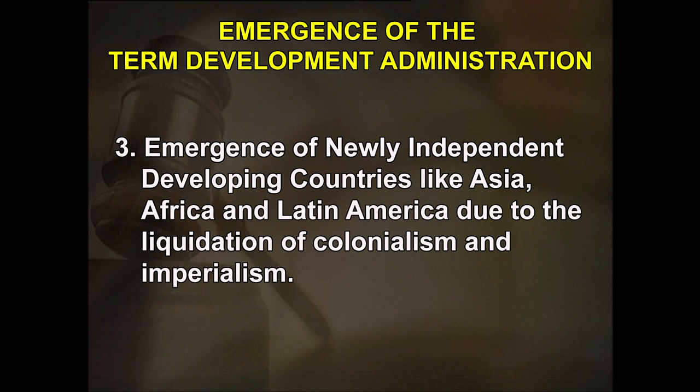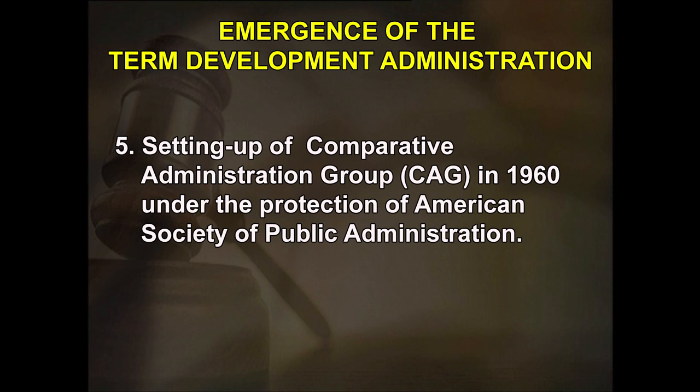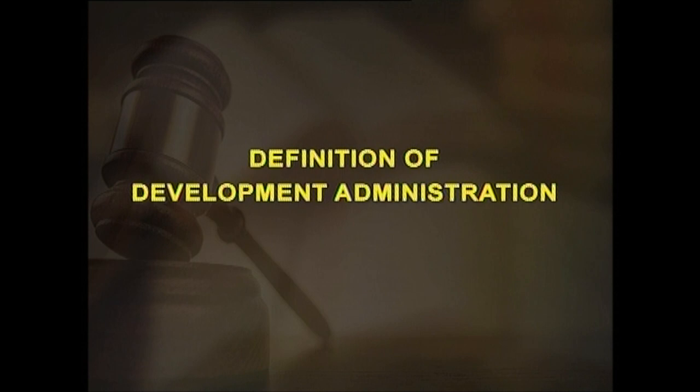Further contributing factors included: United Nations sponsored development schemes in developing countries through multilateral technical aid and financial assistance; setting up of the Comparative Administration Group (CAG) in the year 1960 under the protection of the American Society of Public Administration; and the search for a new indigenous administrative model to meet the developmental needs of developing countries, due to the failure of Western models in these countries.